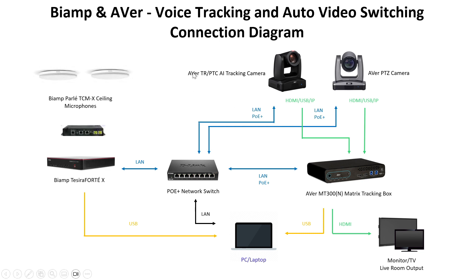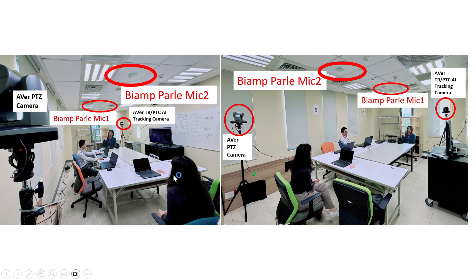First of all, let's take a look at the connection diagram. Here we have one AVER TR-PTC AI GEN camera and one AVER PTZ camera. We also have two IAM Poly TCMX ceiling microphones, an IAM Tessera 48X DSP, and an AVER MP300 metric tracking box, all connected on the same network. We have three participants in this room sitting around the table.